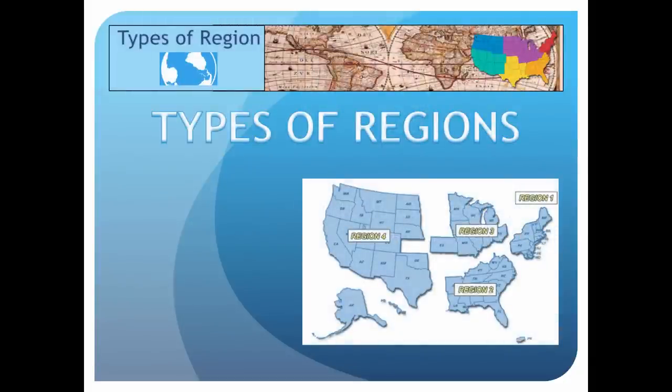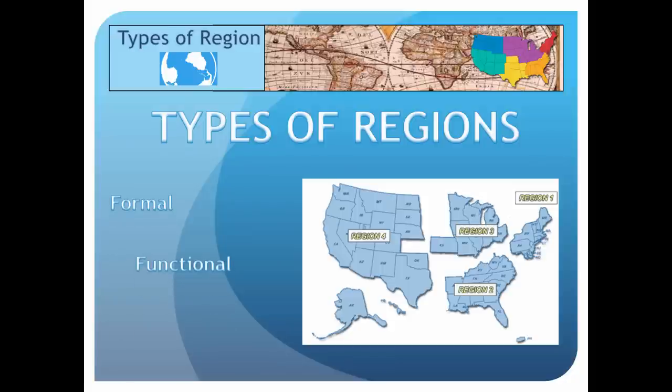All right, so we know what a region is — it's a place that shares something in common. There are many different types of regions, so how do geographers classify them? Geographers have classified regions into three different groups: Formal, Functional, and Vernacular.